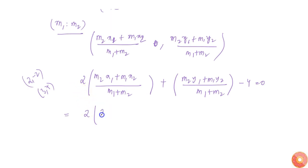That is 2m2 + m1 into 3 by (m1 + m2). I can multiply the whole thing with (m1 + m2), and then this will become m2·y1, that is -2m2 + 7m1 - 4(m1 + m2) = 0.